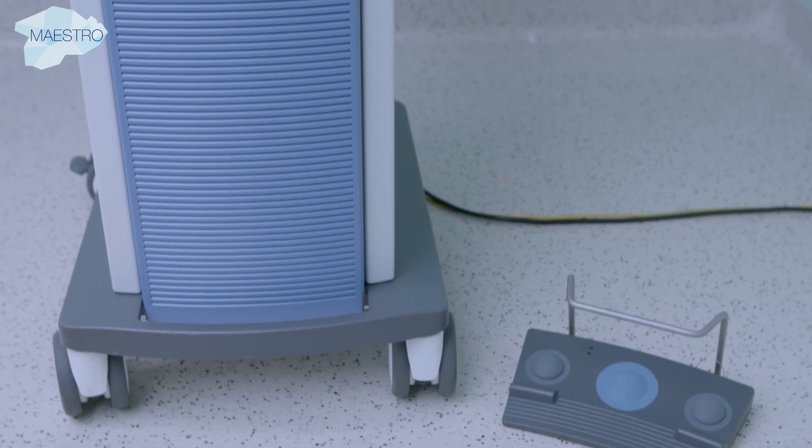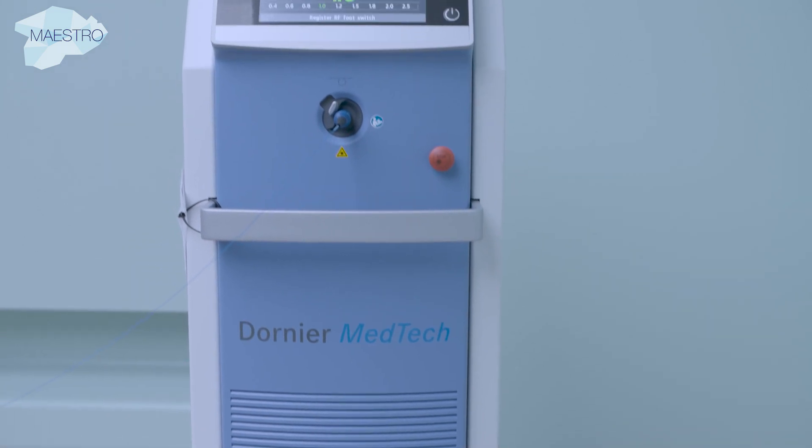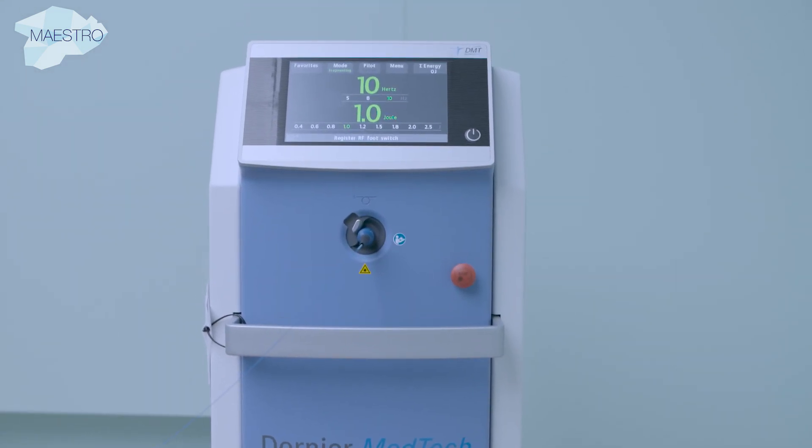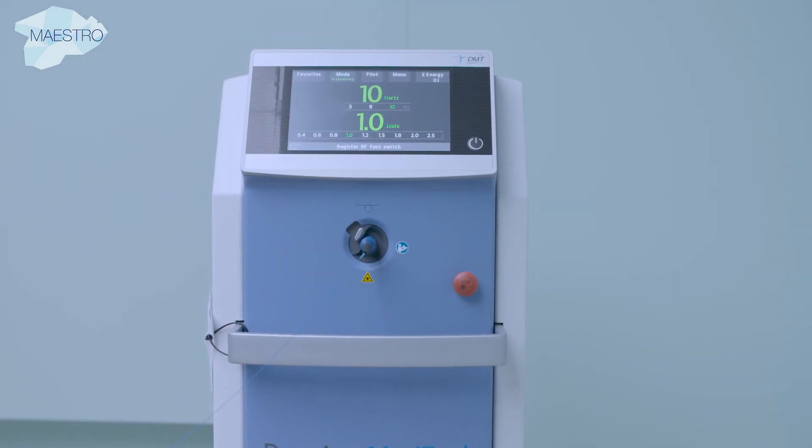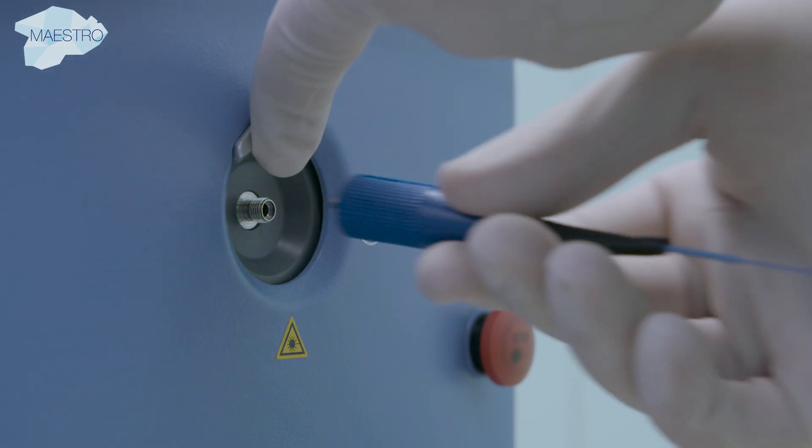The Holmium YAG laser is a solid-state laser made with the rare earth element holmium in combination with a yttrium aluminum garnet crystal. It operates at a wavelength of 2100 nanometers, which falls in the infrared spectrum and is therefore invisible to the human eye.